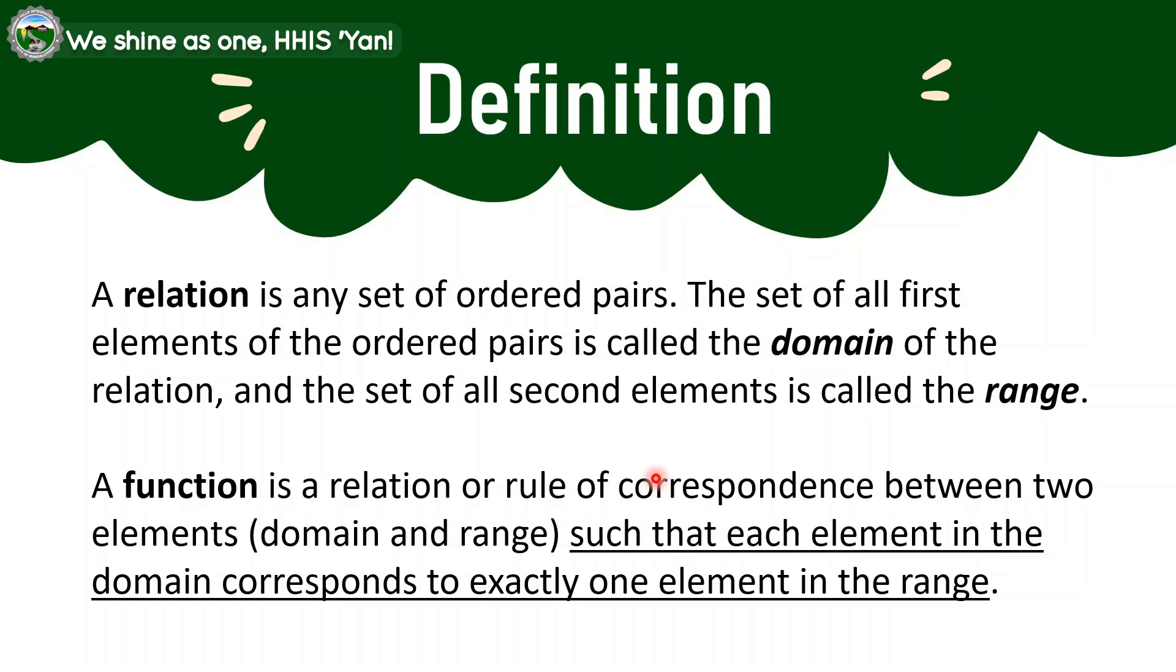Let us proceed to the definition of a relation and a function. A relation is any set of ordered pairs. The set of all first elements of the ordered pairs is called the domain of the relation, and the set of all second elements is called the range. A function is a relation or rule of correspondence between two elements, the domain and range, such that each element in the domain corresponds to exactly one element in the range.